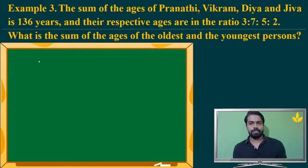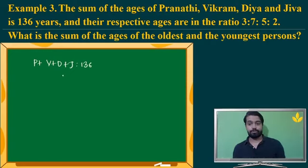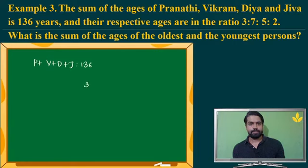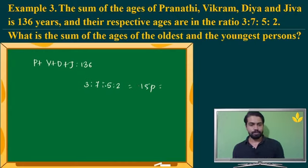Sum of the ages of Pranati, Vikram, Diyar, and Jeeva is 136 years. Their respective ages are in the ratio 3 is to 4 is to 7 is to 5 is to 2. What is the sum of the ages of the oldest and the youngest person? The total ratio parts are 3 plus 4 plus 7 plus 5 plus 2 — that is 17 parts, which is equal to 136.